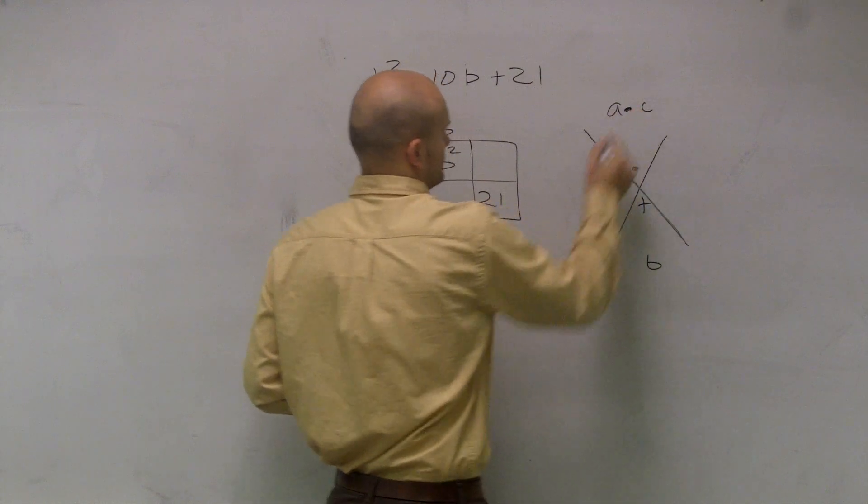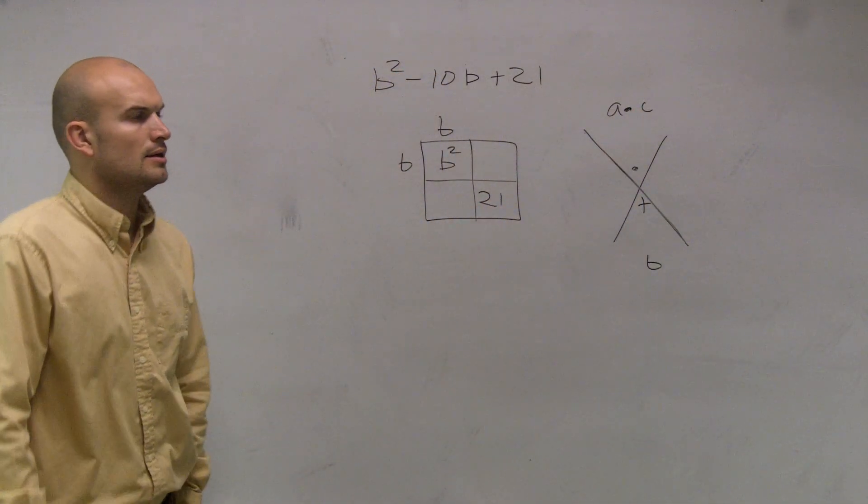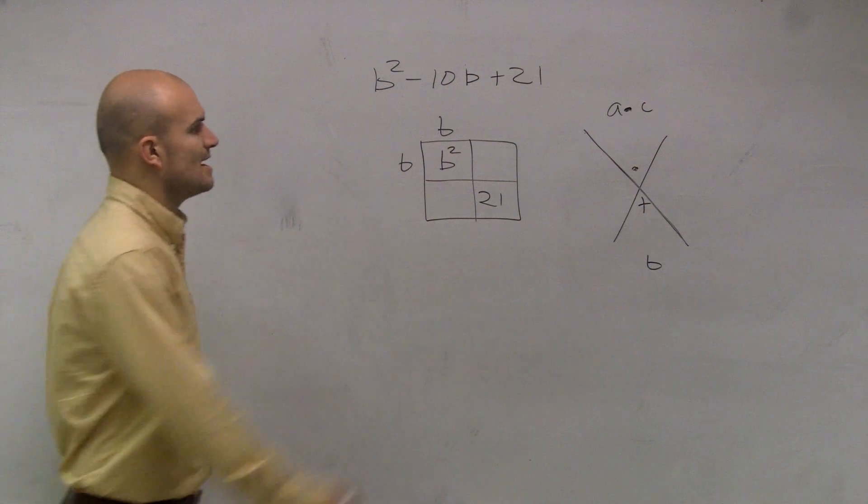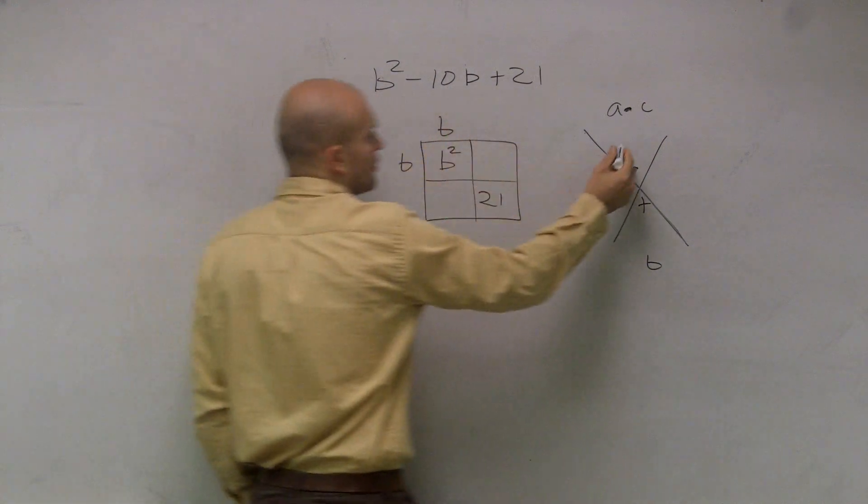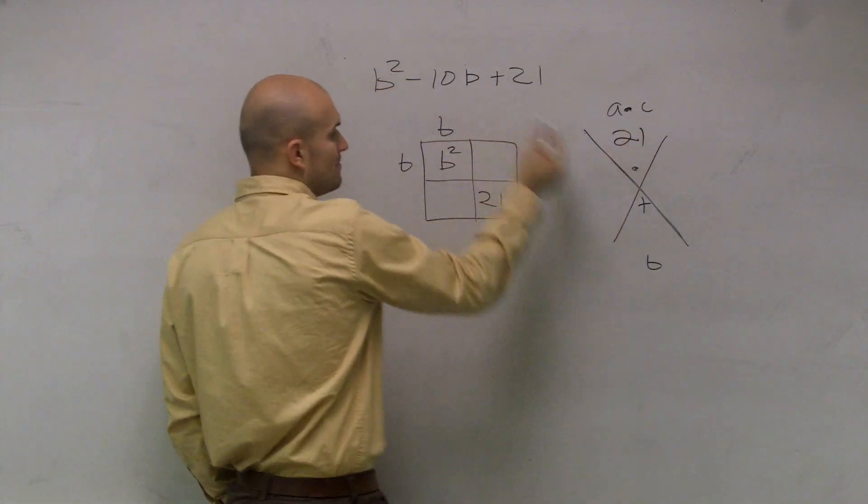So what I have here, Alex, I have a times 1, which is just 1 times 21, which is 21, and b is negative 10.